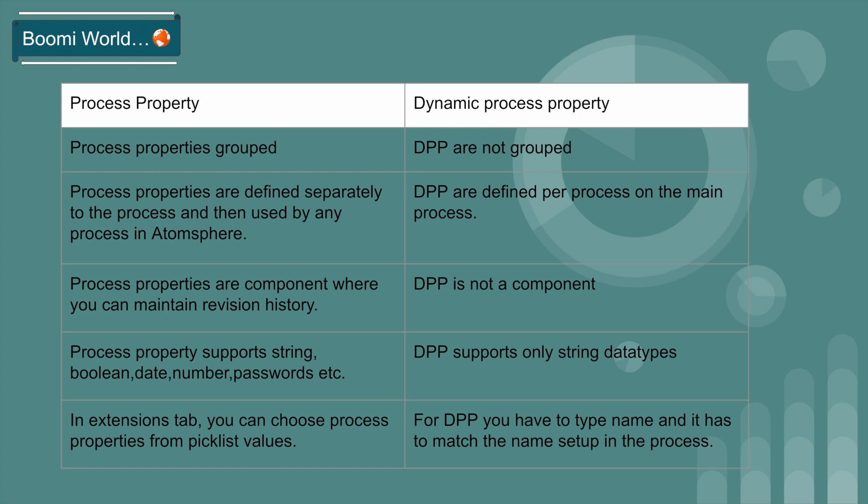Process properties are a component where you can maintain revision history. Dynamic process property is not a component — it is just a single name that you specify in your main process. Process properties support string values, boolean values, date values, number values, and password values, whereas dynamic process property supports only string data types.